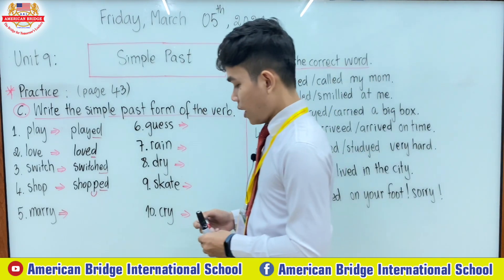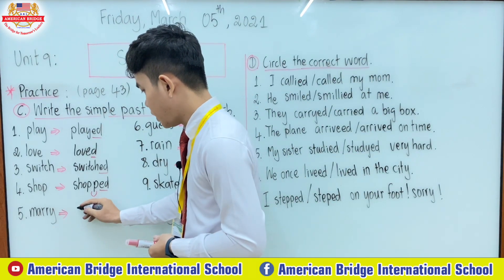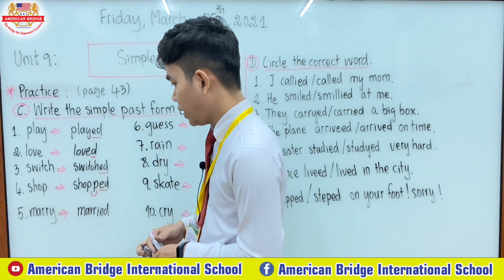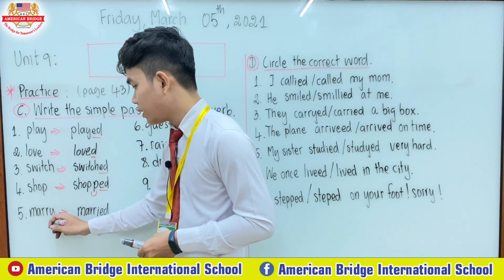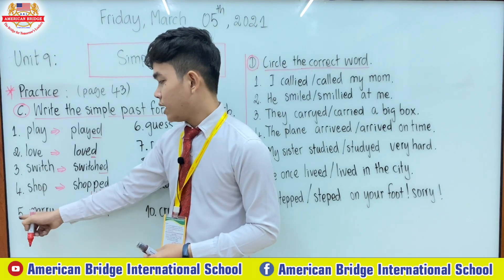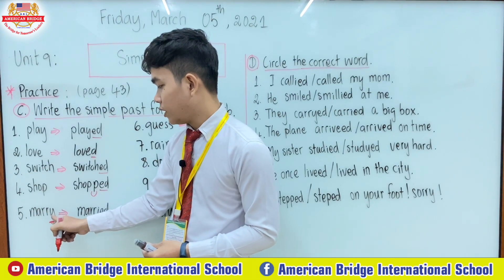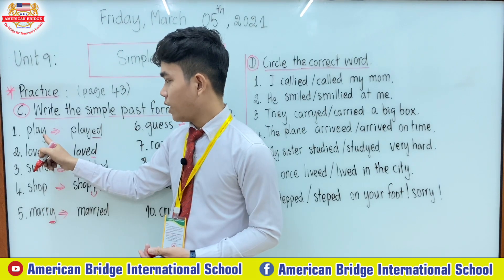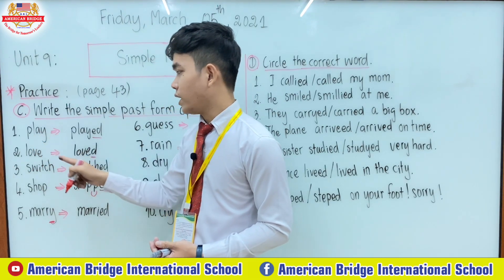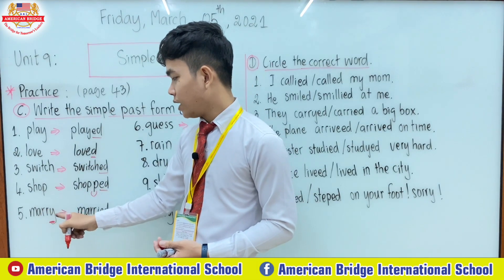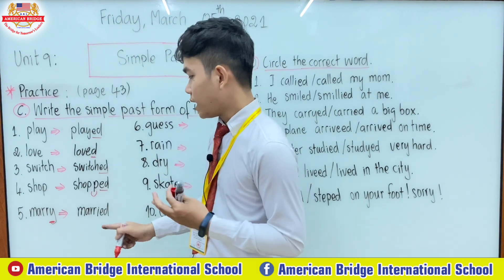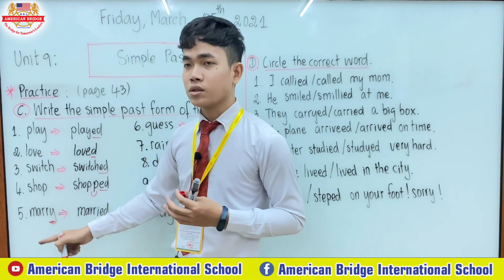Number five: 'marry'. For the word 'marry', you need to change y to -ied. The difference between number five and number one is that in 'marry', the letter in front of y is not a vowel. But for number one, in front of y it is the vowel 'a', so you cannot change y to -ied. For number five, we change y to -ied, and it still keeps the sound of that verb because -ied also represents the sound of the letter y.